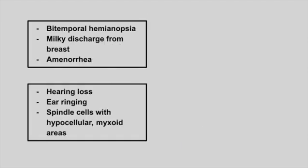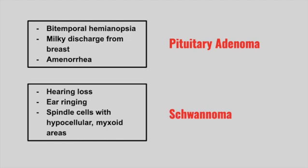Next is a patient who presents with bitemporal hemianopsia. If female, they can have milky discharge from the breast and amenorrhea. This is a pituitary adenoma. The milky discharge and amenorrhea are due to increased prolactin. Next is a patient with hearing loss, ear ringing, and on biopsy it shows spindle cells with hypocellular myxoid areas. This is a schwannoma, which was also seen in NF2.